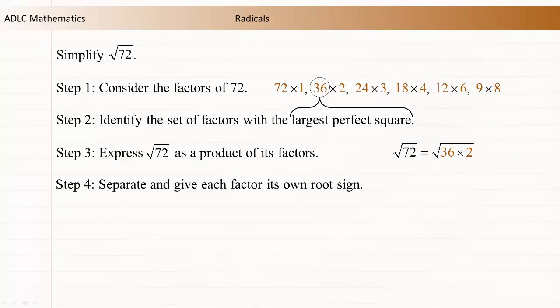Step 4: Separate and give each factor its own root sign. The square root of 72 equals the square root of 36 times the square root of 2.